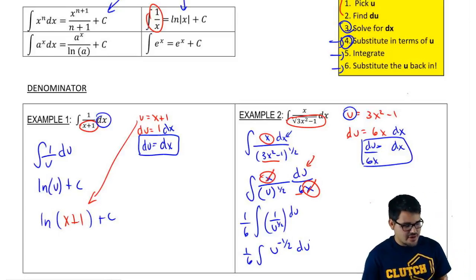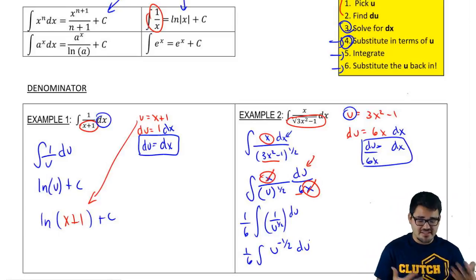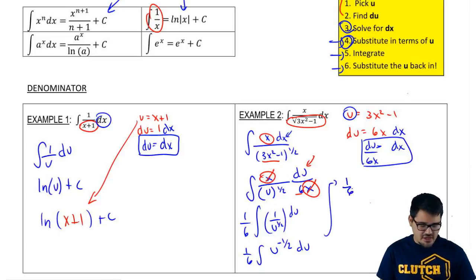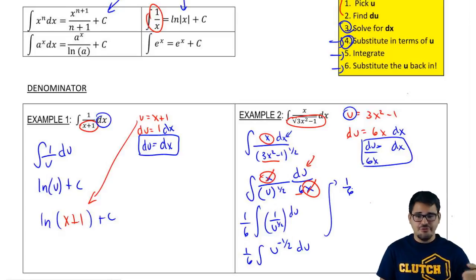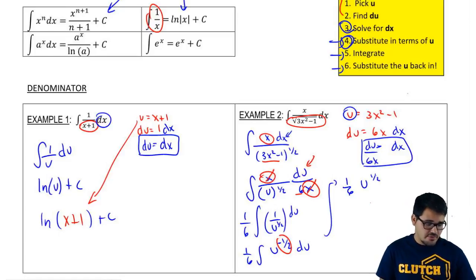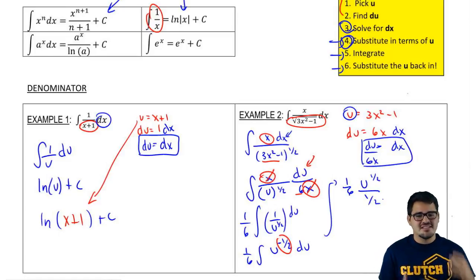We cancel out the x's and bring the 6 to the front. Our new integral is 1/6 times the integral of 1 over u to the 1 half du. We can rewrite this as u to the negative 1 half. We still have no direct rule to integrate 1 over u to the 1 half, but we'll bring the exponent up. So we have 1/6 times the integral of u to the negative 1 half du. Now we're ready to integrate.